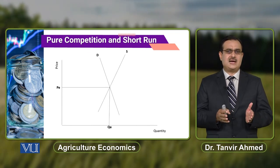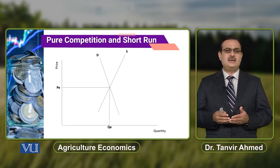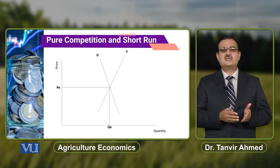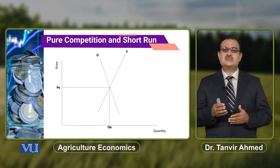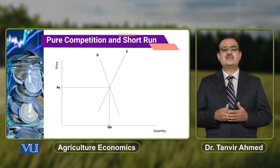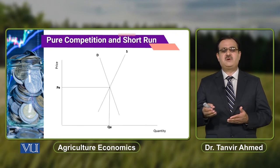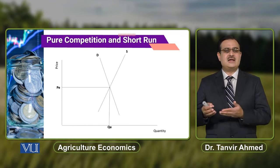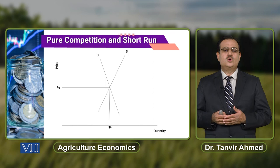उस market में farmer जो भी produce कर रहा है, उसके output की price PE होगी। This price is basically determined in the market where all the producers and consumers interact with each other. इस market में single buyer or single seller has no influence over the price, so this is the price that will prevail in the market and the producer or farmer has to produce his level of output against the given price.